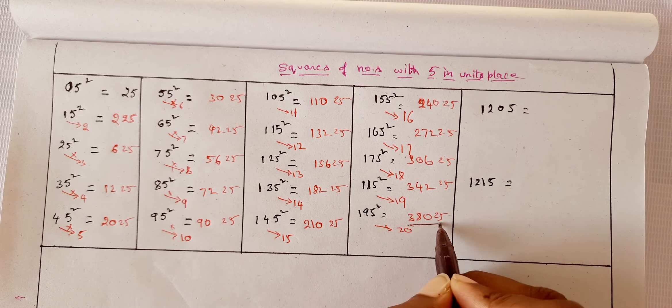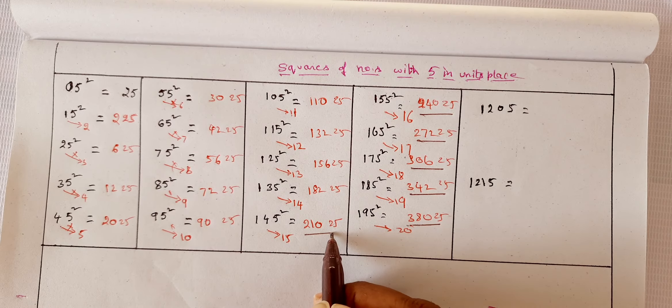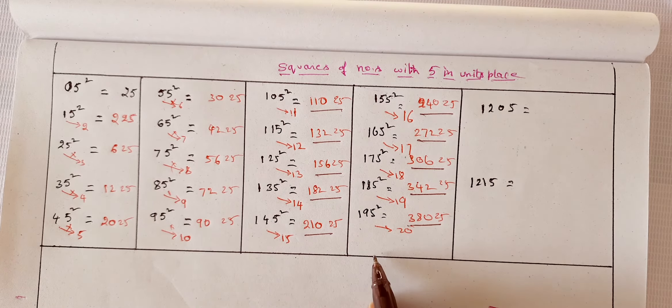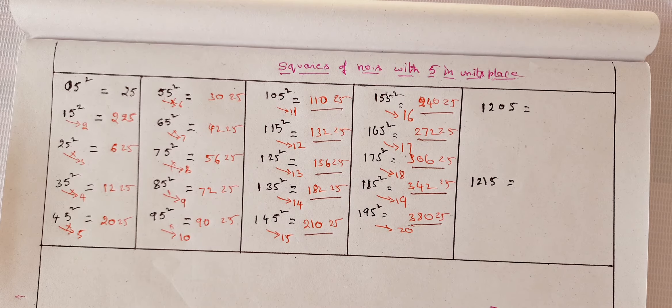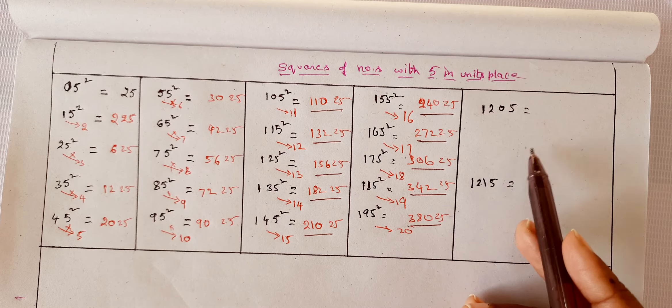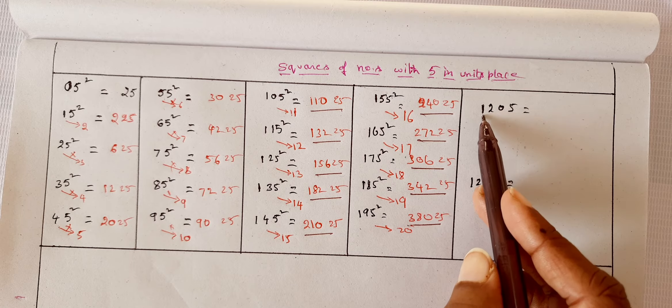Now you may ask me, ma'am, you are solving only where all means three-digit numbers are ending with five, right? So now we can apply the same trick to any number of digits. The only thing is the length of multiplication will be increasing here.